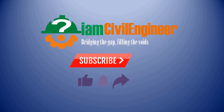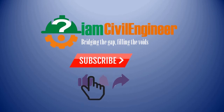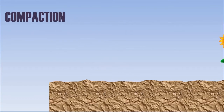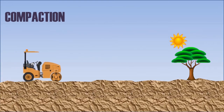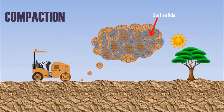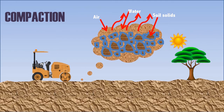But before moving ahead, do support us by subscribing to our YouTube channel. Let's first understand how compaction of soil happens. When you compact the soil, you're actually compressing its matrix. Have a closer look — you can see the soil matrix includes soil solids, water, and air.